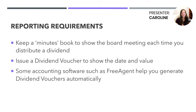HMRC wants you to keep a minutes book to show the board meeting each time you distribute a dividend — this is a meeting between the directors where they decide how many dividends to distribute based on the company's profit. Then you need to issue a dividend voucher showing the date, value, and often the company it's been paid from. Accounting software often helps you generate a dividend voucher based on the dividend payment transferred out. If it's just yourself, the software can help cover the dividend voucher aspect, and often the voucher also includes a minutes book entry — covering both reporting requirements. The dividend voucher should be sent to the recipient and the company should also keep a copy for its own records.